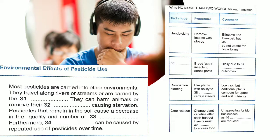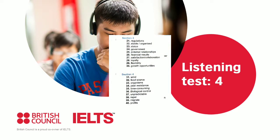A final possibility is crop rotation. This involves alternating plants every harvest, which forces insects to migrate in an attempt to locate their food source. Crop rotation is unappealing for large-scale commercial operations, however, because the high cost of constantly changing crops cuts into their profits. As you can see, there's still no easy answer to the question of how to keep plants free from the scourge of pests. That is the end of Section 4. You now have half a minute to check your answers. That is the end of the listening test.